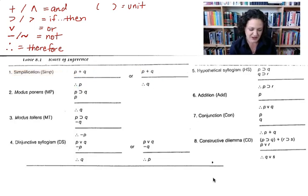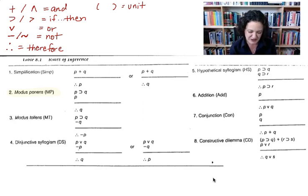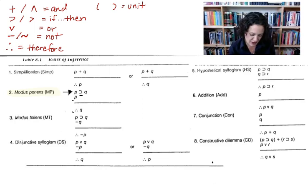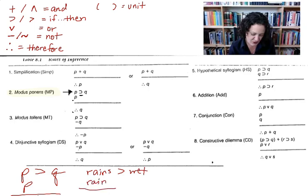Let's go back to these argument forms. Modus ponens is the mode of positing. There's no negation in it. Modus ponens says: if P then Q, P, therefore Q. For example: if it rains, then it's wet outside. It has rained, therefore it is wet outside. That's modus ponens.